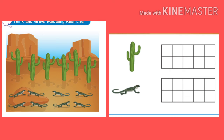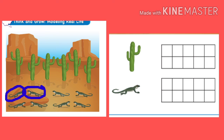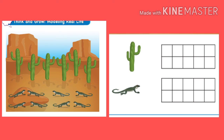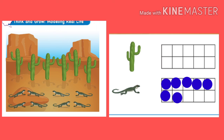Now let's proceed to the lizard. How many lizards are there in the big picture? Okay, let's count. One, two, three, four, five, six, seven, eight. There are eight lizards. Since there are eight lizards, we're going to color eight boxes. One, two, three, four, five, six, seven, eight. Good job, kids. We did it.